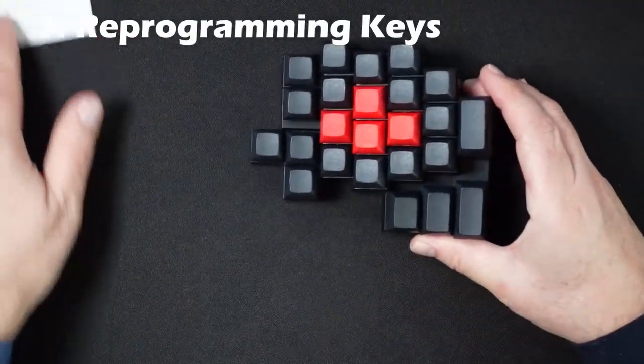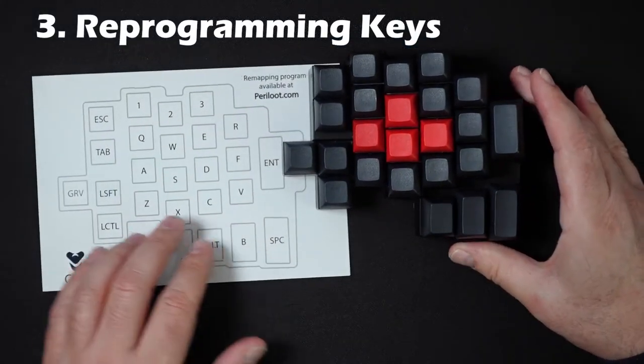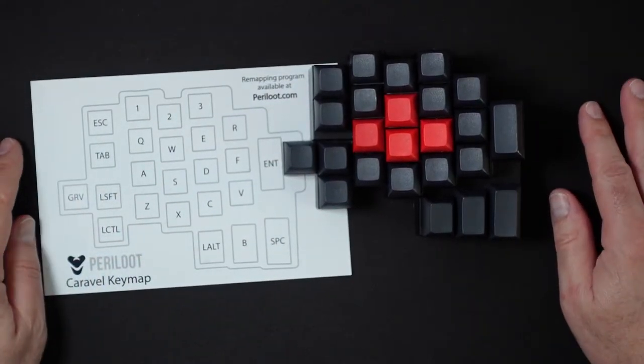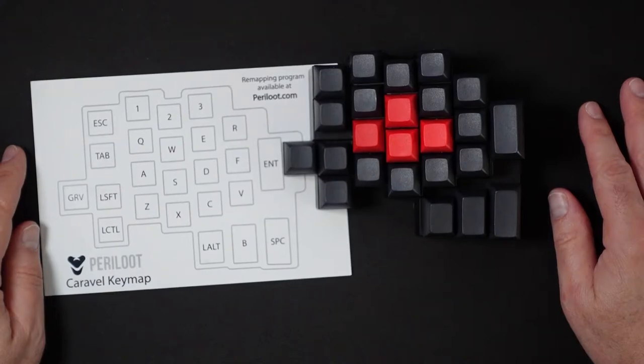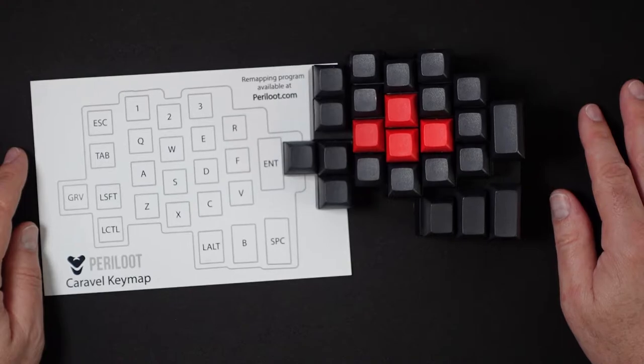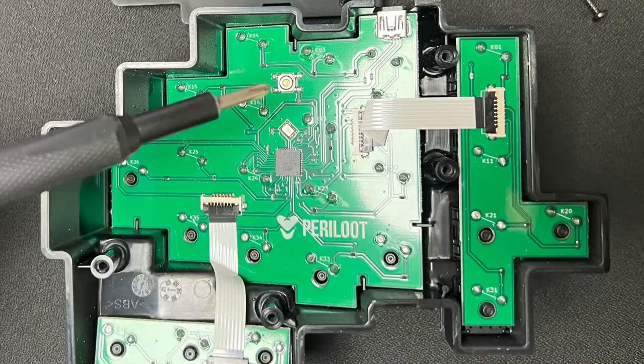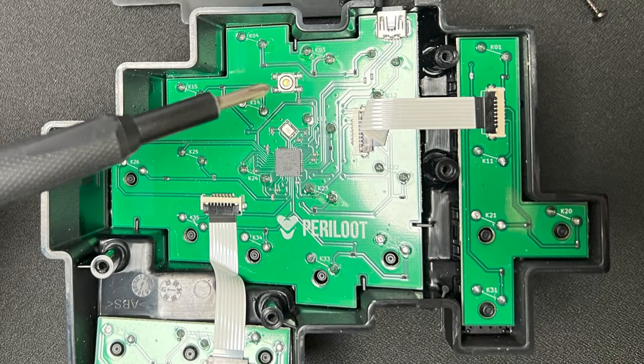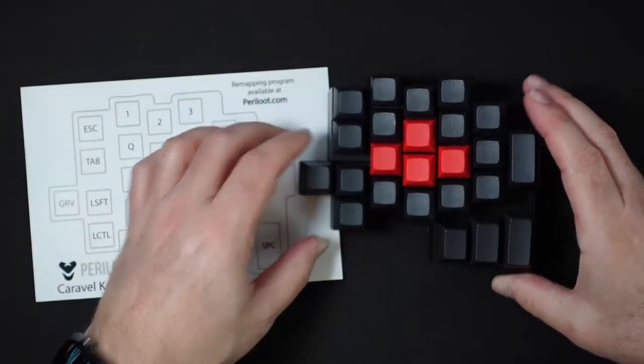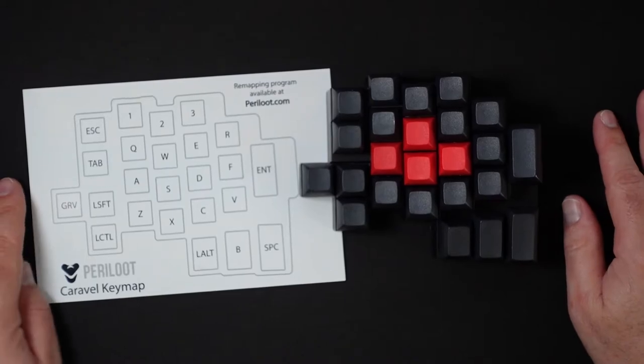Number 3: Reprogramming. Many gaming peripherals have relatively easy-to-use software that allows quick remapping of keys. The Perilute does offer software that allows you to remap the keys, but it does require you to open the Caravelle and to press a small button on the PCB. Not a deal killer, but if you want to reprogram key mappings, it does require a little work.